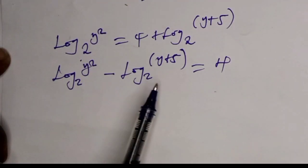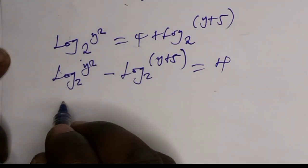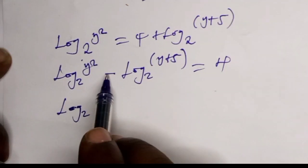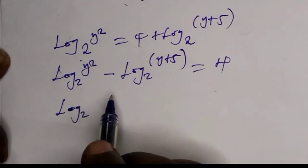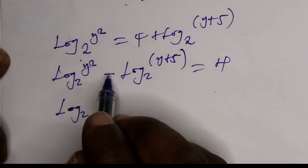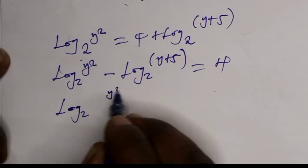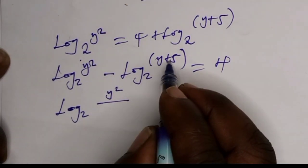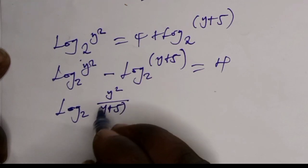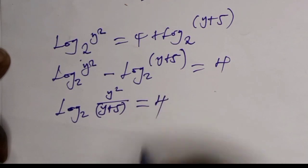The only thing you have to do here is get one base, one log. Since here it is negative, it means there is a division. It will be log base 2 of y squared divided by y plus 5 in the bracket, which is equals to 4.